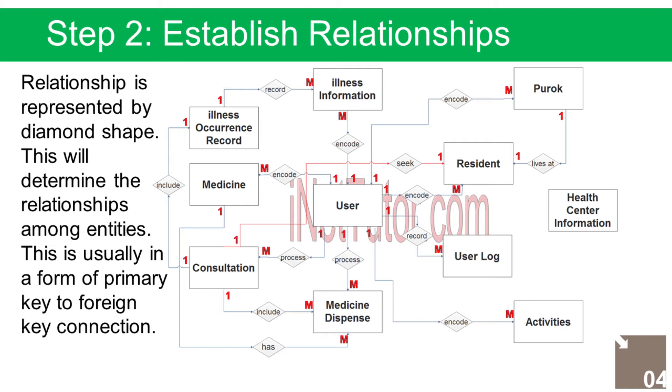After we have specified our entities, it is time now to connect or establish relationships among the entities. Relationship 1: The user records or encodes the list of activities of the Health Center — a 1 to many relationship.